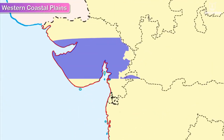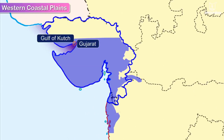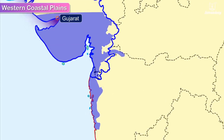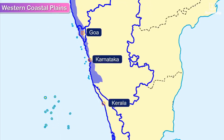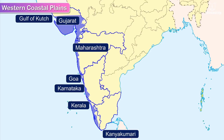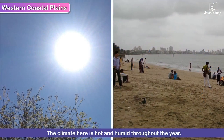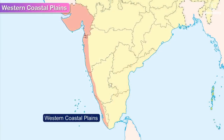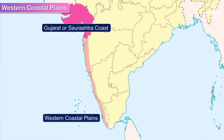The western coastal plains begin in Gujarat at the Gulf of Kutch, going southwards through the western parts of Maharashtra, Goa, Karnataka and Kerala, right up to Kanyakumari, which is the southernmost tip of the Indian mainland. The climate here is hot and humid throughout the year. The western coastal plains are divided into three main parts: Gujarat or Saurashtra coast, Konkan coast, and Malabar coast.